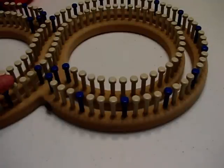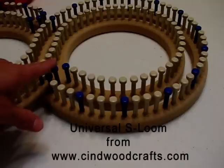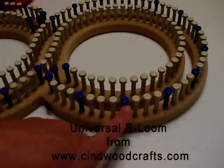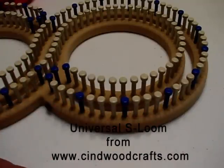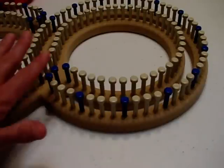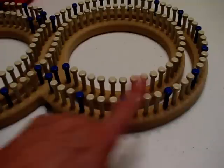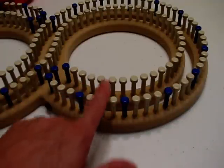This loom is the Universal S loom from Cindy Wood Crafts. The color pegs are not used when you're working a double panel, which is what we'll be doing today. So when we are doing our cast-on, we will skip the color pegs, only using the beige or white pegs.